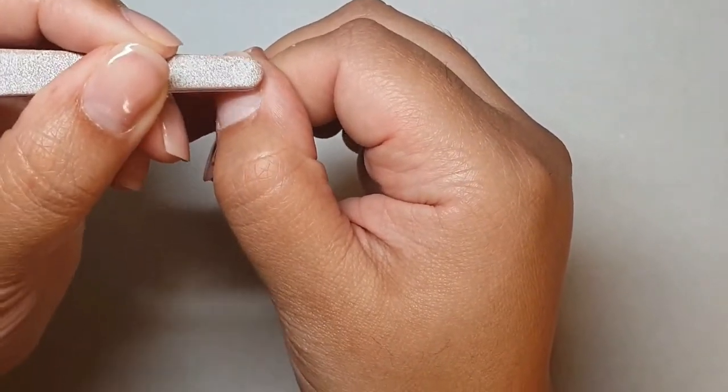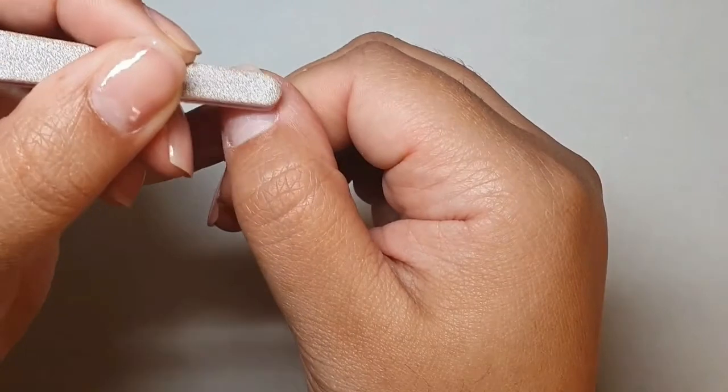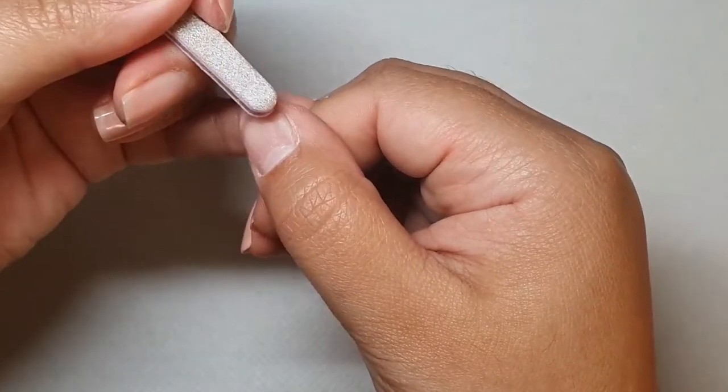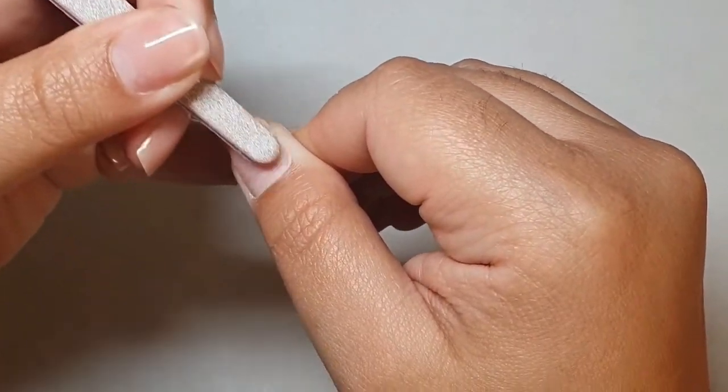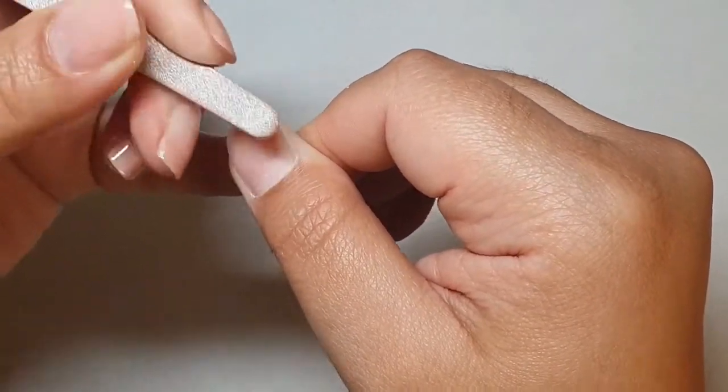Once we've pushed back, we're going to use our file. I'm using the tapered end of my 100/180 file, and I'm going to start on one side of the nail, working my way over around the cuticle area.